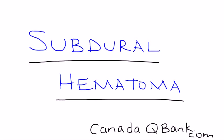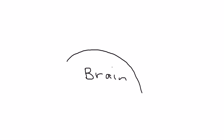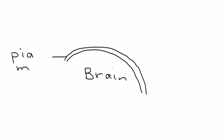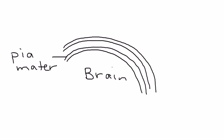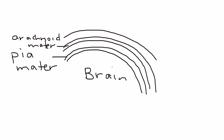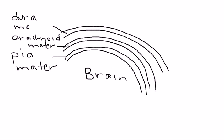Subdural hematoma is the topic, and the best way to start is by drawing a diagram to describe all the layers. You have the brain, and right on top of the brain sits a layer called the pia mater. Above that there's a little bit of space, and then you have a second layer known as the arachnoid mater. Above that there's a little bit of space, then a third layer — the topmost layer — known as the dura mater, and directly above the dura mater is the skull.